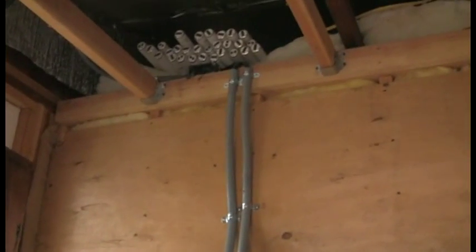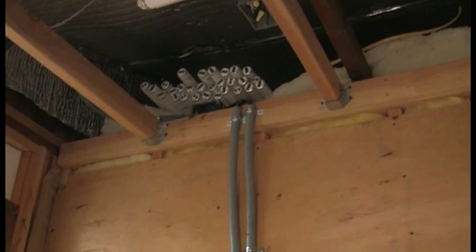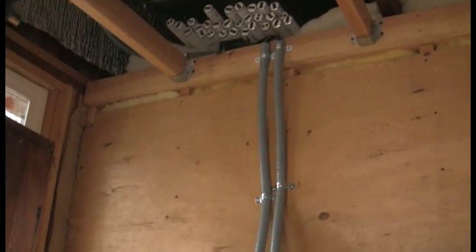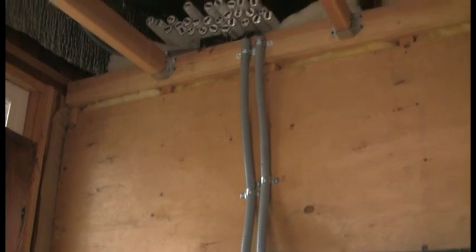AC power comes into the power panel from up here. One side of those wires comes from the main service disconnect panel; the other set goes back out to a subpanel where the loads for this building are being served.